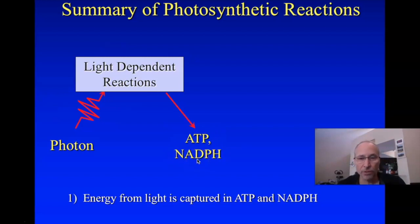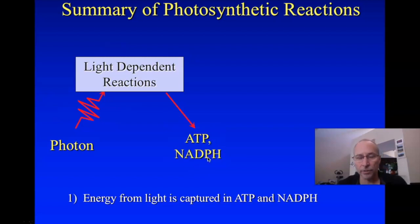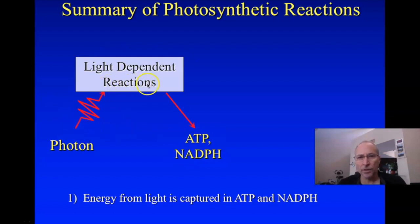NADPH is very similar to a molecule we've already seen. If you remember from the previous lecture, we looked at NAD, nicotinamide adenine dinucleotide. This is precisely the same thing, except it has an extra phosphate group on it. So this series of reactions is just the start of photosynthesis — we take that energy and use it to make ATP and NADPH.